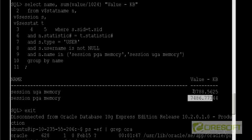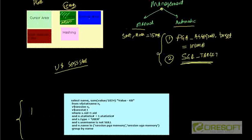Since I'm not running any complex queries right now, the session memory is relatively low. If I ran complex queries, this value would increase. To summarize: the UGA can either be part of the PGA in dedicated server mode, or it can be part of the SGA in shared server mode.